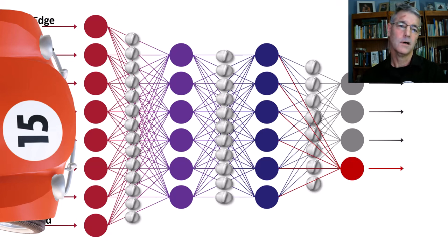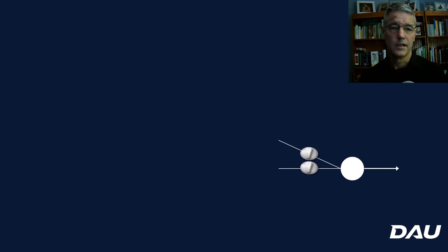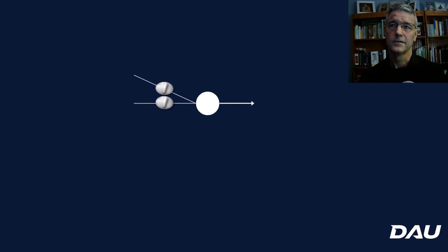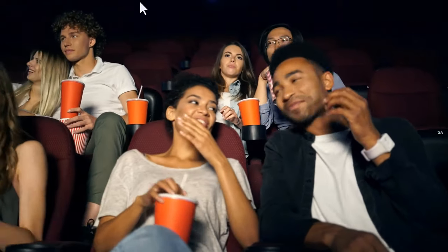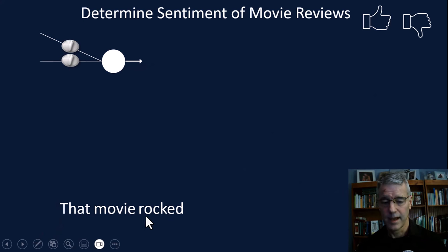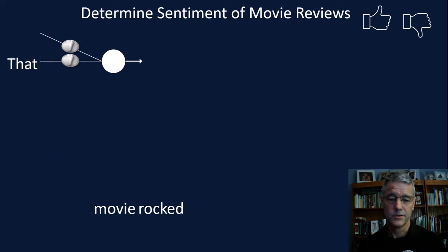To teach a network to talk, we first have to teach it how to deal with sequences of data. To do this, we'll take a single neuron from the network — we don't need all the inputs, just two — and move it up to determine the sentiment of movie reviews with our little recurrent neural network. If our review says 'that movie rocked,' we'll move our little network and put that into our input. For the first word, the input would be null — nothing — beginning of sequence.